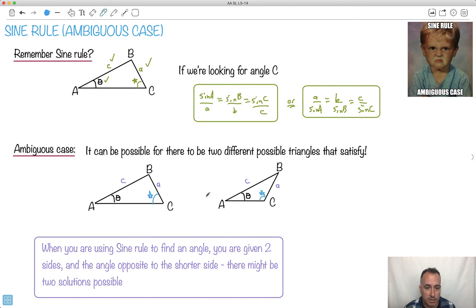But there's also this one, this obtuse one. There's an acute angle that's less than 90, and there's an obtuse one that's greater than 90. They both have the same angle theta, the same length C, the same length A.